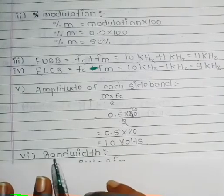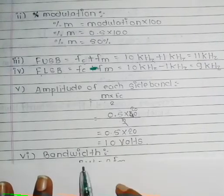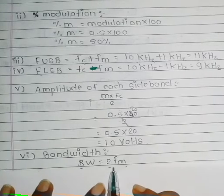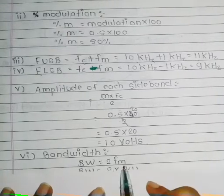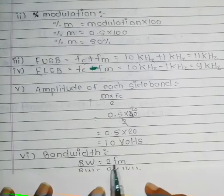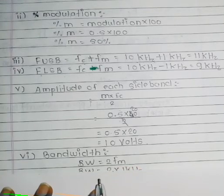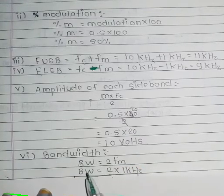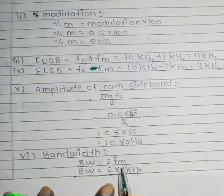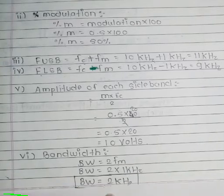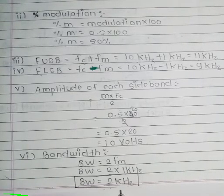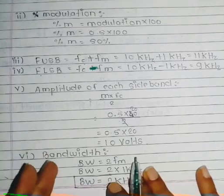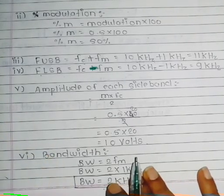Finally, the bandwidth formula is BW = 2 × FM = 2 × 1 kHz = 2 kHz. So the bandwidth is 2 kHz.